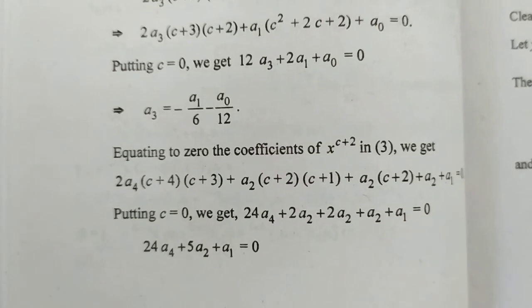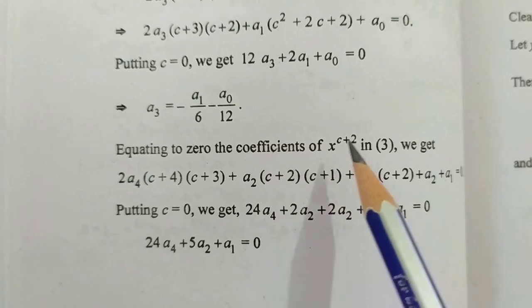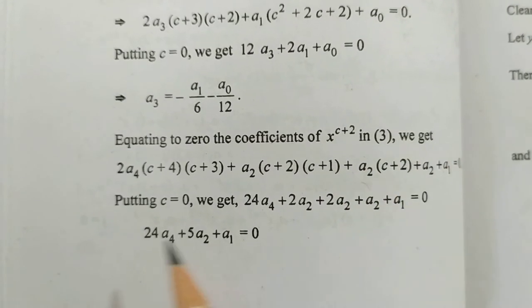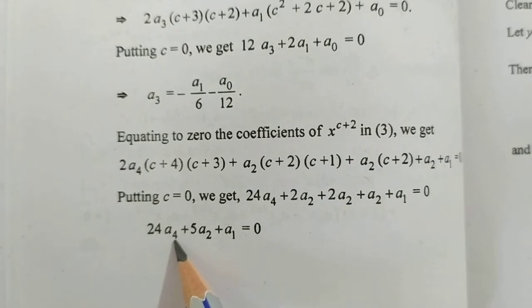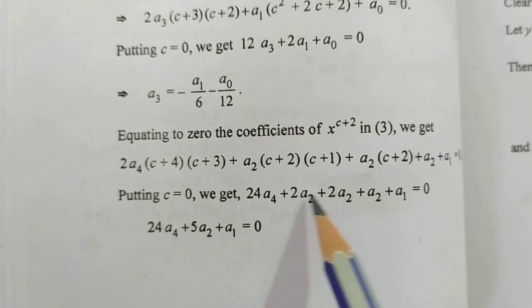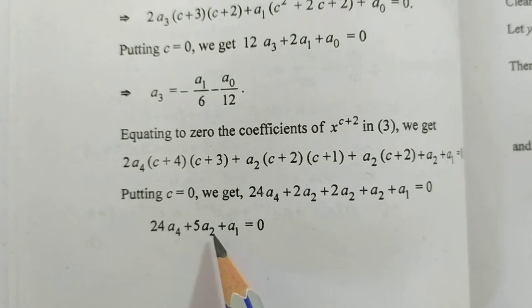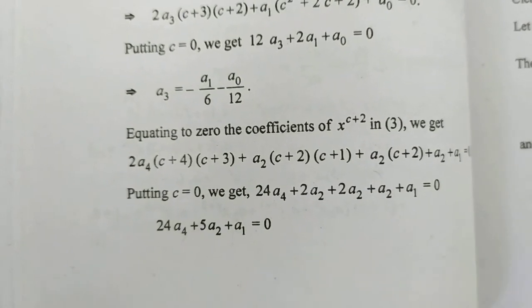Equating to zero the coefficient of x^(c+2) in equation 3 and putting c = 0, we get 24a₄ + 5a₂ + a₁ = 0. Therefore a₄ = 5a₀/96 - a₁/24, and so on.